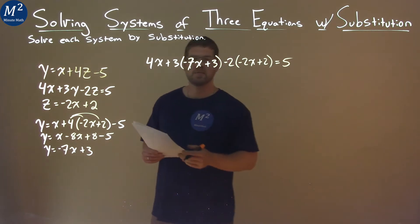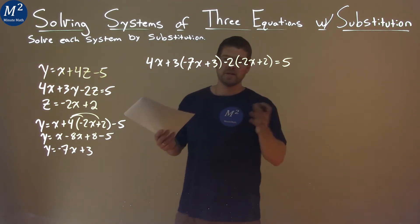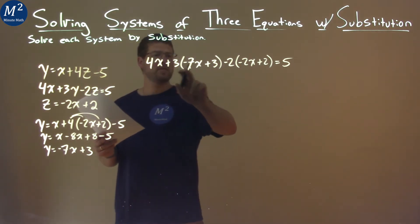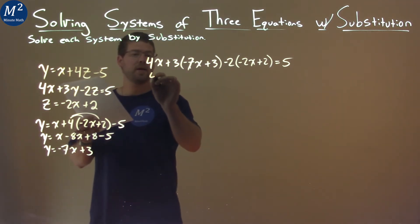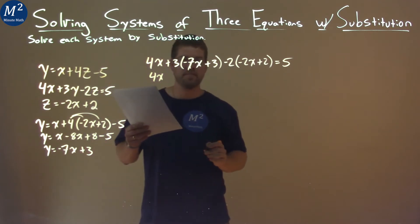Now, don't be afraid, this is a large equation. But what makes us happy is we only have x's in it. So we know we can simplify this and get x by itself. So let's bring down and simplify, take it little steps at a time. 4x comes down, distribute the 3.